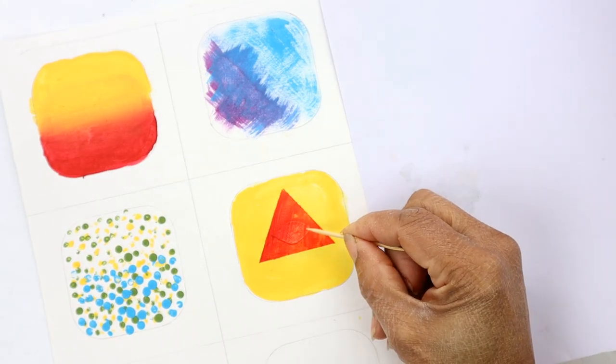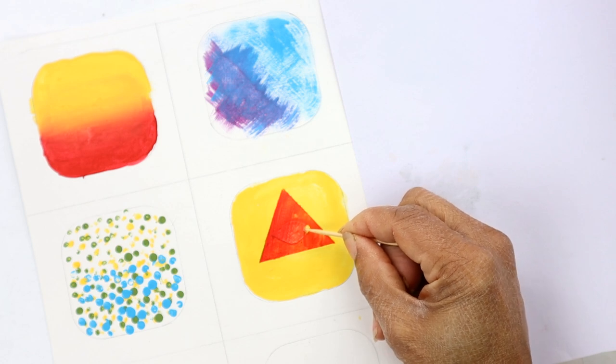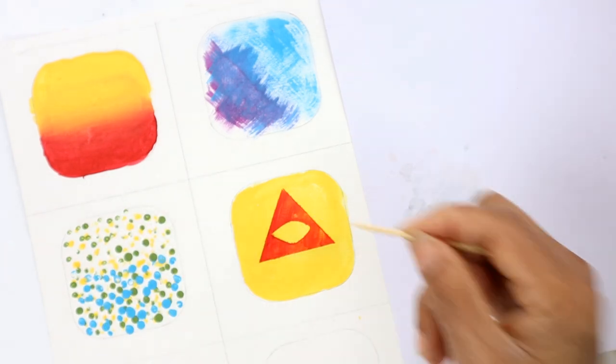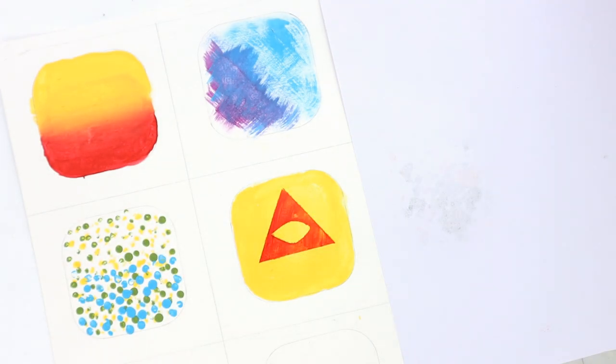This was supposed to be a leaf on top of a triangle, but it's kind of looking like the all-seeing eye on a pyramid. Okay, what can I say, it must be something very subconscious going on here.